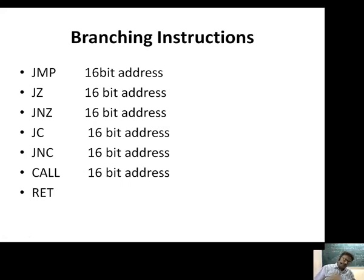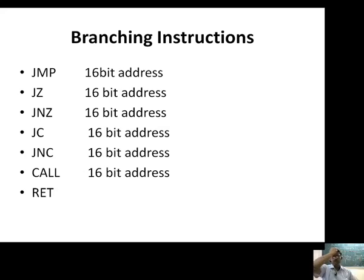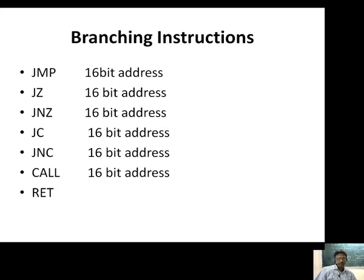When CALL is executed, it changes the sequence of the program and executes the subprogram at the 16-bit address. The last instruction of the subprogram is the RETURN instruction, which returns control back to the main program — specifically to the next instruction from where the CALL was made. All these — JMP, JZ, JNZ, JC, JNC, CALL, and RET — are branching instructions. Besides these general ones, there are more branching instructions to be discussed later.